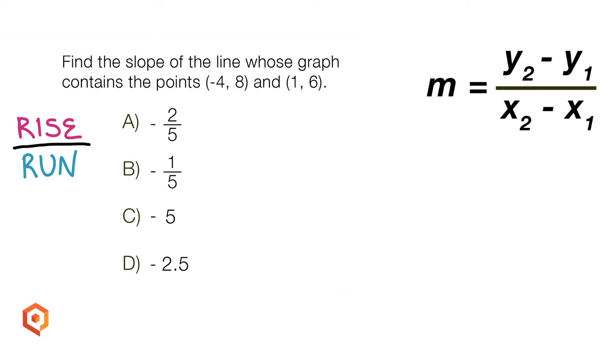If you've ever calculated the slope of a line when given two points, you've probably used this formula. Don't let those subscripts scare you. They're meant to help you keep the two points straight. It doesn't really matter which point you call x sub 1, y sub 1, or x sub 2, y sub 2, as long as both coordinates in each ordered pair have matching subscripts. Makes sense, right?